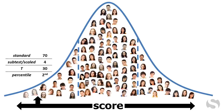Whatever the metric, a lower standard score means most same-age peers performed better on that test. At two standard deviations below the mean, a standard score of 70 is the same as a subtest or scaled score of 4 and a T score of 30, all of which are at the second percentile. So, a 16-year-old who gets one of these scores performed better than only 2 out of 100 other 16-year-olds.